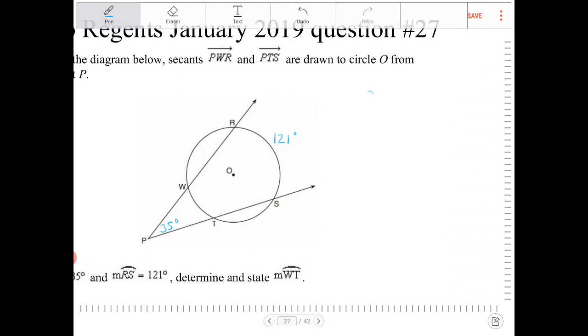Okay, so the circle theorem that you need to know for this problem is this: if I have arc A, arc B, and they are formed by the intercepts of the two secants, and the two secants meet at a common point outside of the circle, then angle C is going to be the difference between A and B divided by 2.